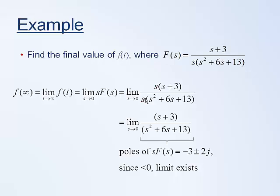Looking at this limit, since the function inside the limit is defined at s equals zero, we can simply plug in zero into the limit. And so what we'll have in the numerator is zero plus 3, and in the denominator we'll have zero squared plus 6 times zero plus 13. And so that equals 3 divided by 13, and that's the final value of this function.